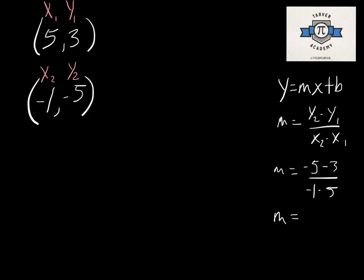Now, I need to finish this little guy off. Negative 5 minus 3 is negative 8. Negative 1 minus 5 is negative 6. Now, can we simplify that? All day, every day. 4 over 3. Okay? So, I've got my m. I've got my slope.